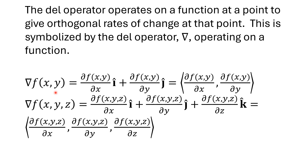The del operator operating on a function gives the partial of that function with respect to x, times the unit vector in the x direction, plus the partial with respect to y times the unit vector in the y direction. In bracket notation, it looks like the two partials enclosed in brackets. For three variables, which is more common — and if you only had two, you could put the third in as z equals zero — it's the partial of f with respect to x in the x direction, the partial with respect to y in the y direction, and the partial with respect to z in the z direction. In bracket notation we include the third dimension.